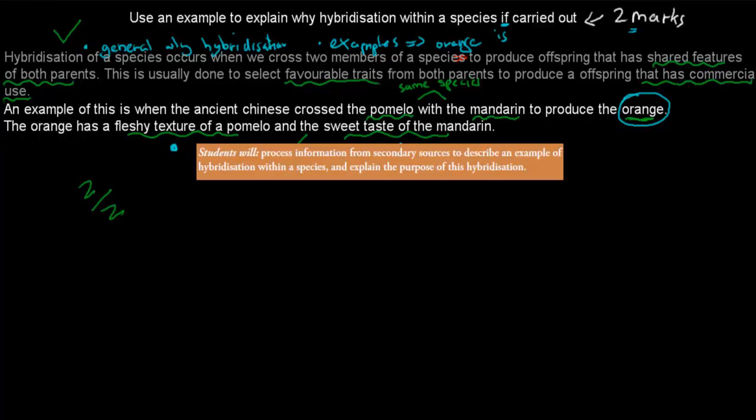And where does this question come from? It came from this dot point. Students will cross information from secondary sources to describe an example of hybridization within a species and explain the purpose of this hybridization.